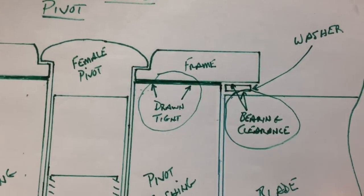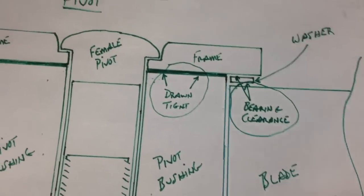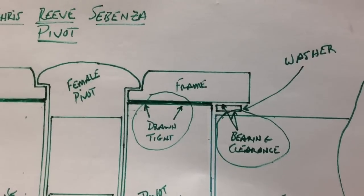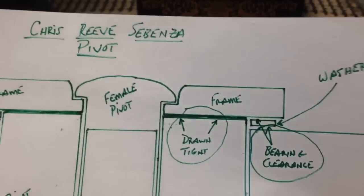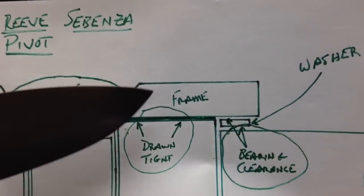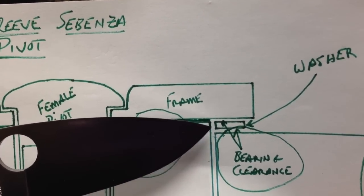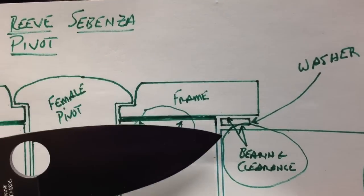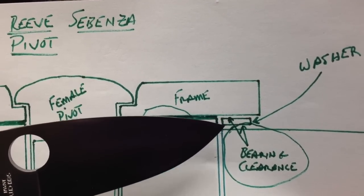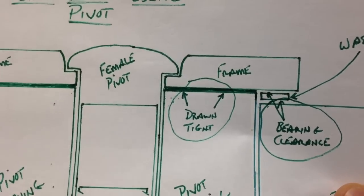Now if you sort of hunt around YouTube a little bit you can find videos of guys tweaking that tension or tweaking that freedom in the blade and the way they do this is by disassembling the knife taking these washers out and very finely sanding or polishing them to relieve some of the blade tension and give the blade the desired freeness in swing that they want.